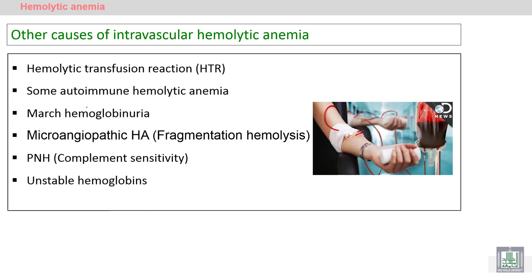Other causes of intravascular hemolytic anemia include incompatible blood transfusion leading to hemolytic transfusion reaction, some autoimmune hemolytic anemias where autoantibodies destroy red blood cells intravascularly, march hemoglobinuria, microangiopathic hemolytic anemia with RBC fragmentation, and inflammation of blood vessels such as vasculitis.